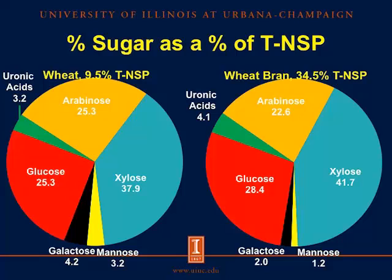Looking at wheat and wheat bran: wheat has 9.5% total NSP, of which 25.3% is arabinose, 37.9% is xylose, and 25.3% is glucose. Moving to wheat bran with 34.5% total NSP, arabinose makes up 22.6%, xylose 41.7%, and glucose 28.4%. Here we can conclude that arabinoxylans — arabinose and xylose — make up the majority of total NSP in wheat and wheat bran, with glucose or cellulose to a smaller extent and other sugars making up the rest.